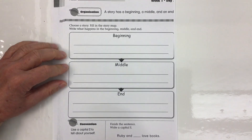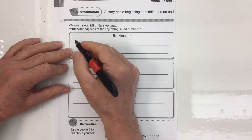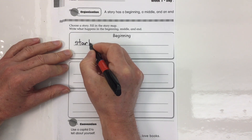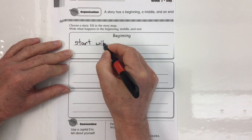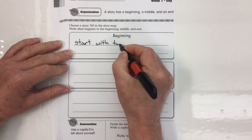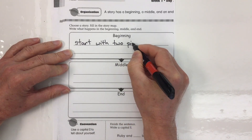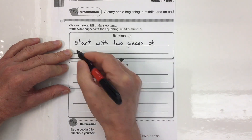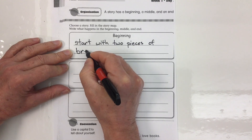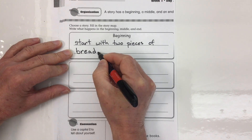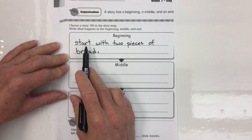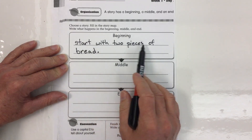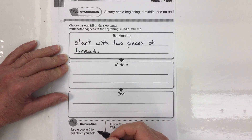In making a sandwich, we can say in the beginning: start with two pieces of bread. I like the word 'start' — that's a good word to use when you're really describing a beginning. Start with two pieces of bread. That's the first thing you do to make a sandwich.